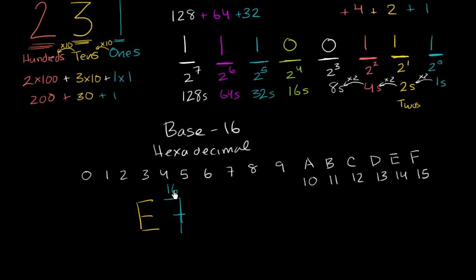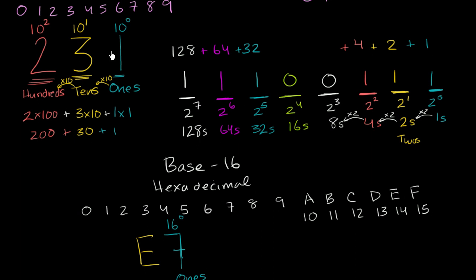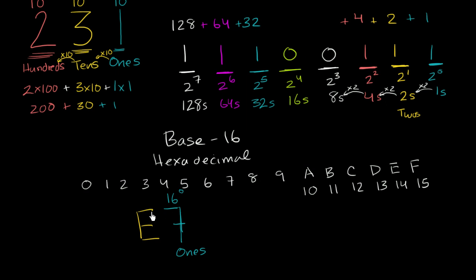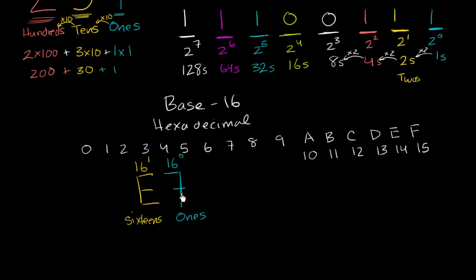What does the second place represent? In base 10, that was 10 to the first power. In base 2, that was 2 to the first power. So in base 16, this is going to be 16 to the first power — the 16s place. So E7 is E 16s plus seven ones.